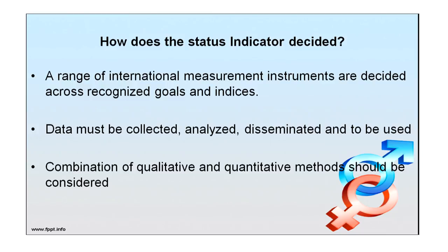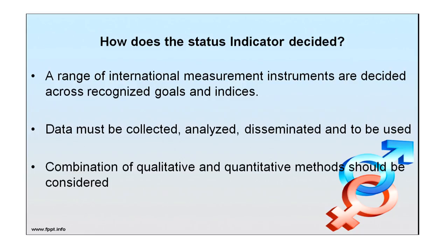How is a status indicator decided? A range of international measurement instruments are decided across recognized goals and indices. Sometimes there are pre-decided measurement instruments established by various research institutes and centers working on gender indices. Data must be collected, analyzed and disseminated to decide upon an indicator. A combination of qualitative and quantitative methods should be considered.